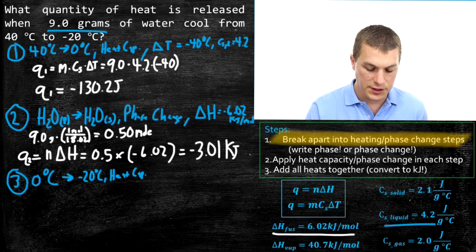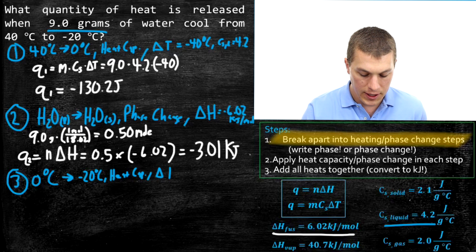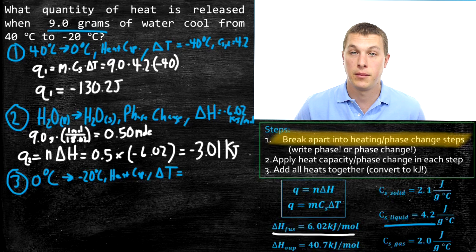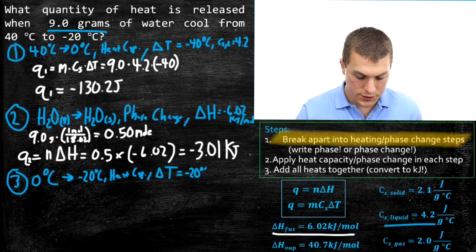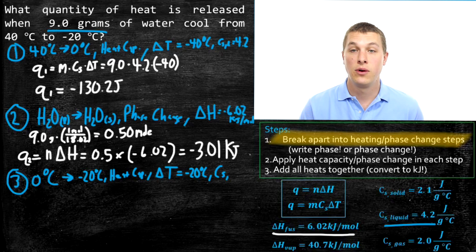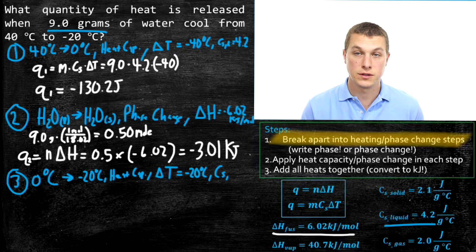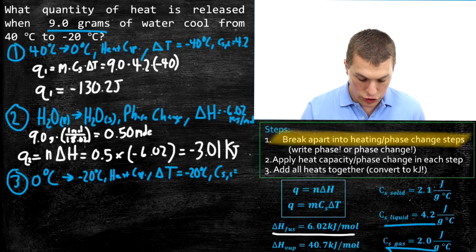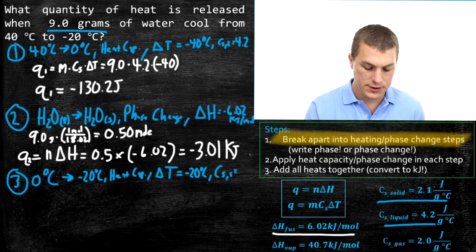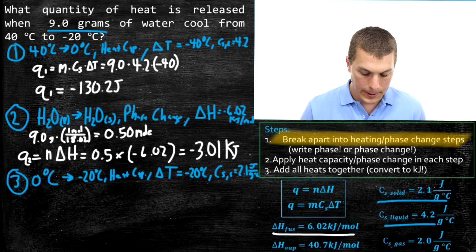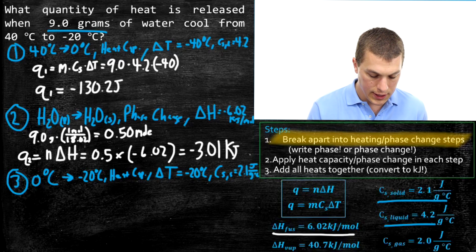Alright, let's go to step three. Once again a heat capacity problem. In this case my delta t is going from zero degrees to minus 20. If I do final minus initial, negative 20 degrees minus zero, gives me negative 20. So this is decreasing the temperature by 20 degrees. What heat capacity should I use? Well now that I've frozen water, that's what I did in step two, I need to use the heat capacity for frozen water or solid. If I look at that down in the bottom right corner, I'll see that that is 2.1 joules per grams degree Celsius.